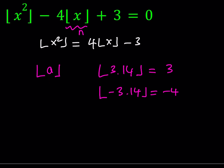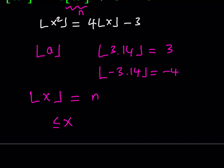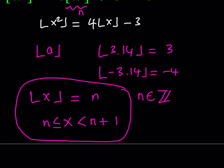So if the floor value of x equals n, that means x needs to be between n and n plus 1 — x can equal n, and n is an integer. For example, if a number's floor value is 5, that number can be 5 or greater than 5 but less than 6. This is basically all we need to solve floor value equations.